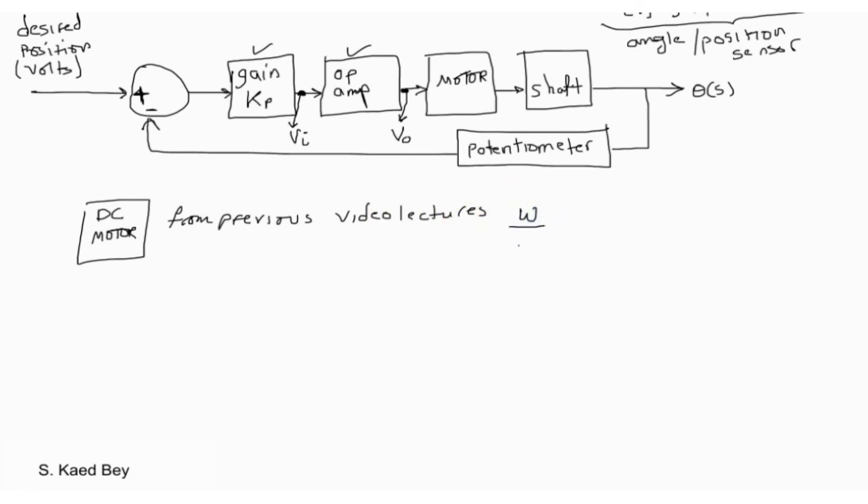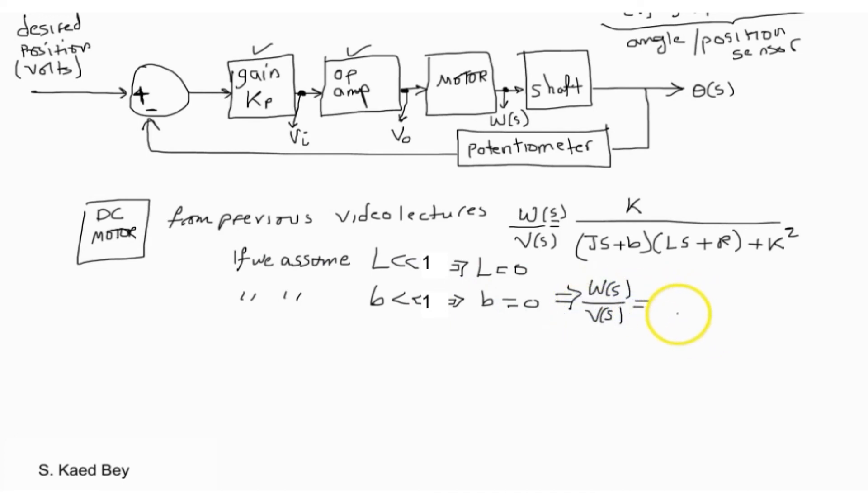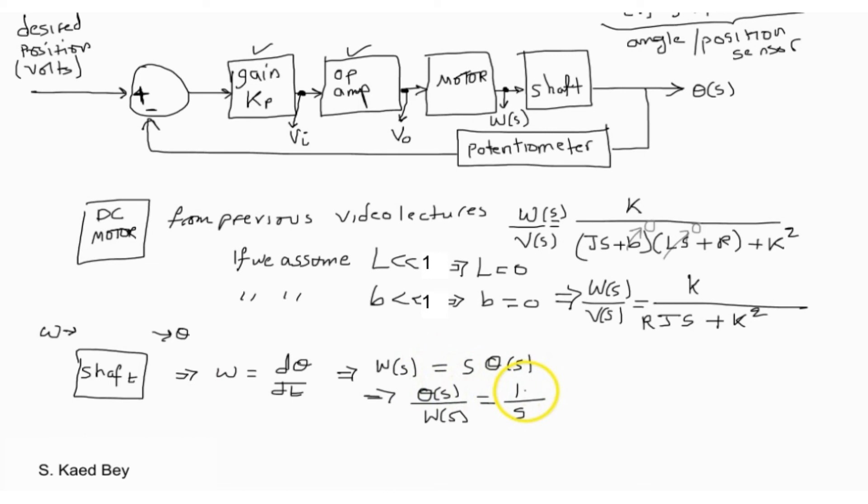If you recall from a previous lecture, we managed to obtain output rotational speed of the DC motor in terms of the input voltage. Now for simplifying the calculations, if we assume the inductance is zero and friction or any viscous friction is also zero, then we can arrive at the following relation. Remember since our main objective is to control the position of the DC servo motor, we need to convert the radian per second or the output of the motor transfer function into an angular position. We can simply use that the derivative of the position gives the angular velocity. Hence the main objective of the shaft block is to integrate the angular velocity into position.